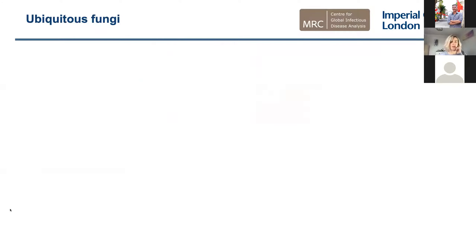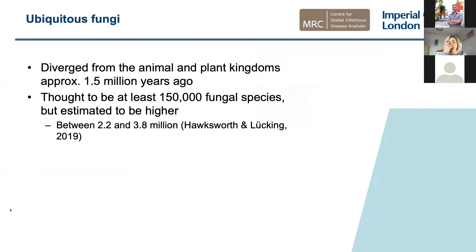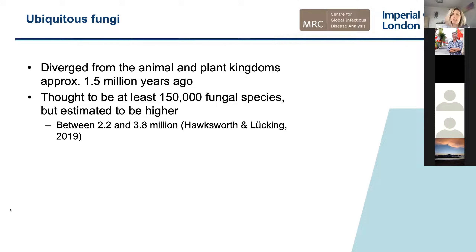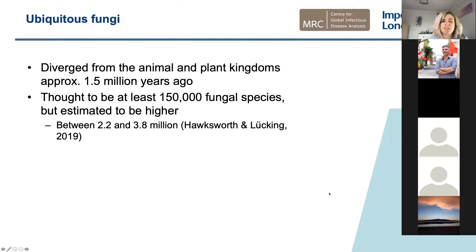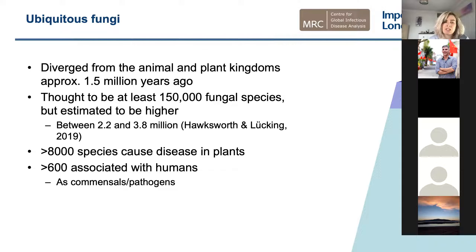Fungi are ubiquitous. They diverged from the animal and plant kingdoms approximately 1.5 billion years ago, and it's thought there are about 150,000 fungal species, though estimates suggest there could be between 2.2 and 3.8 million species. About 8,000 cause disease in plants — we've seen ash dieback in the UK, and infections of banana, cocoa, and coffee plants worldwide. Just over 600 are associated with humans as commensals or pathogens, so it's actually a very small amount that have spilled over into plant and human diseases.